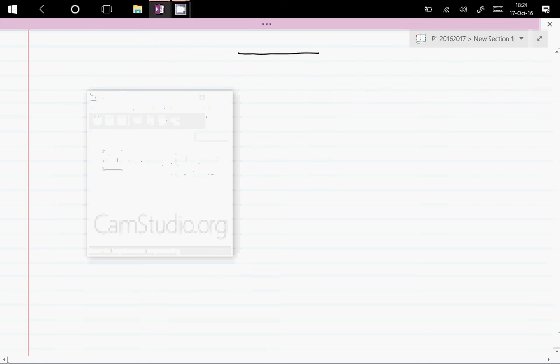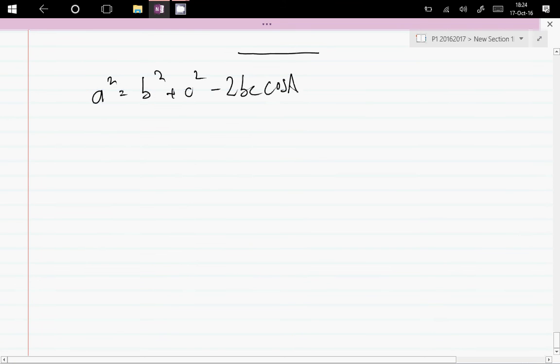So what we're going to be doing is looking at the cosine law: a squared equals b squared plus c squared minus 2bc cos A, and we define the triangle as follows.